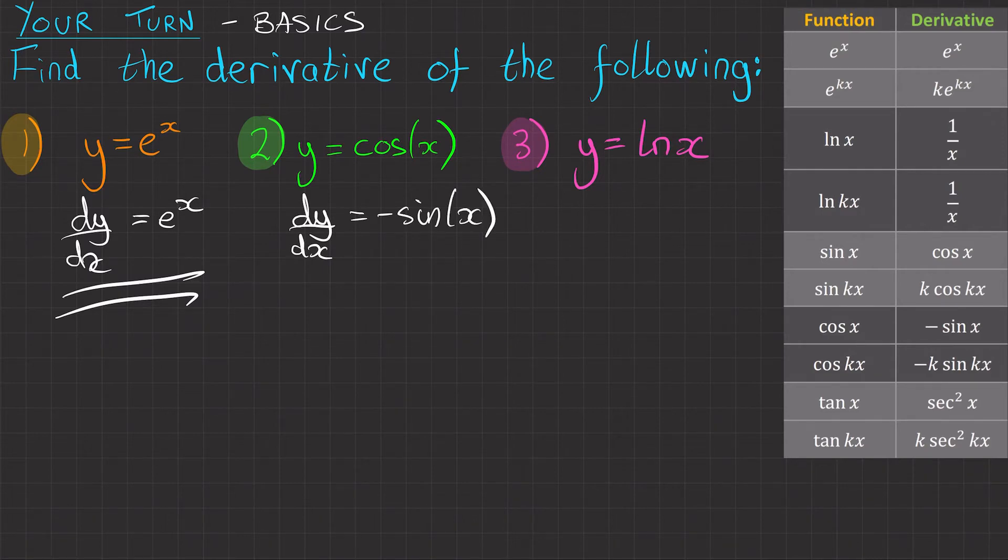Thirdly, we've got y equals ln x. So ln x here and the derivative is 1 over x. So dy/dx equals 1 over x.